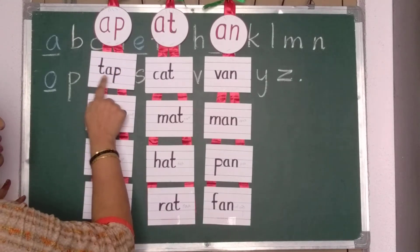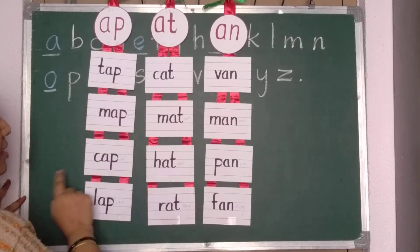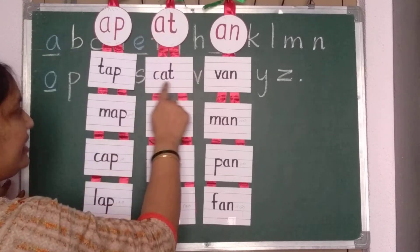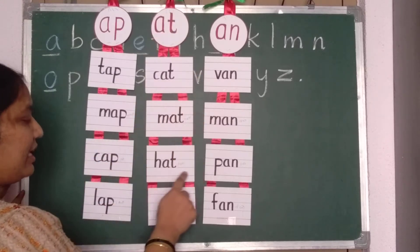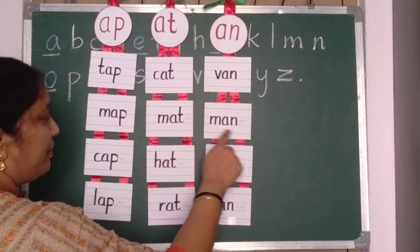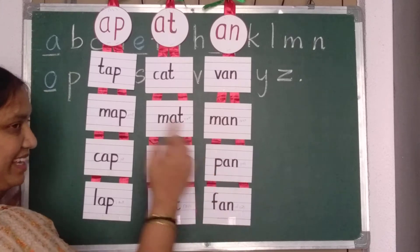A, P sound words. Tap, map, cap, lap. Now, A, T. Cat, mat, hat, rat. A, N, van, man, pan, and fan.